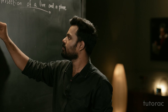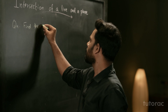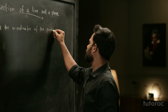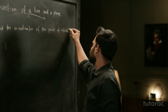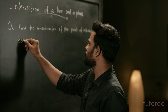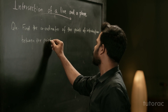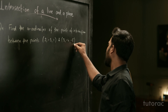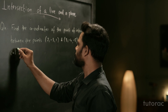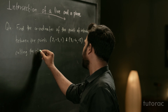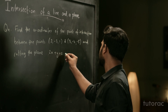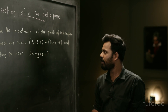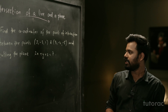The question is: find the coordinates of the point of intersection of the line joining the points (2, -3, 1) and (3, -4, -5), cutting the plane 2X plus Y plus Z equals 7.